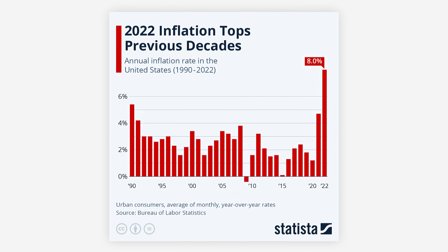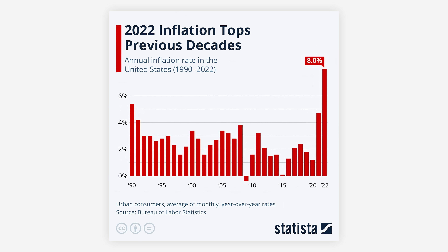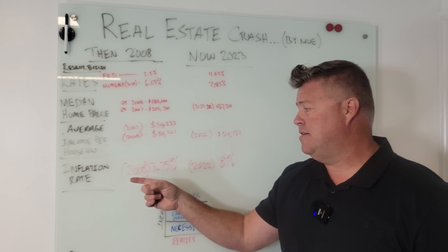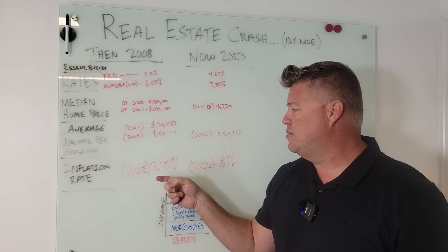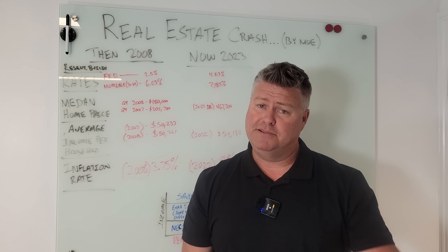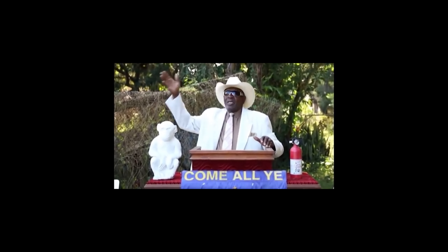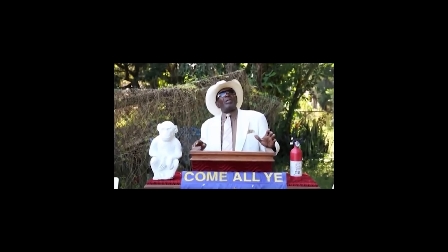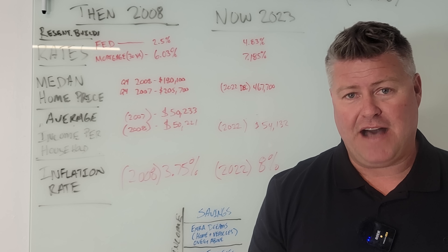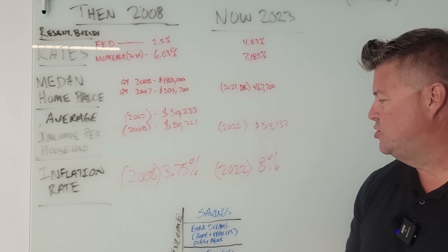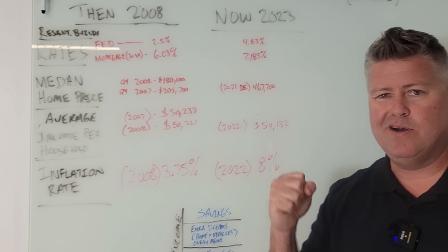Now, the inflation rate. Let's throw up another chart showing the annual inflation rate in the United States from 1990 to 2022. Our 2008 inflation number — the government number — was 3.75%. Now we look at an inflation rate in 2022 of 8%.